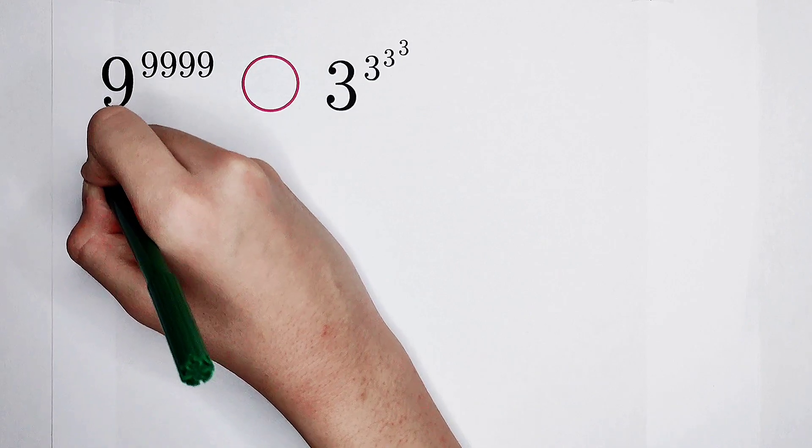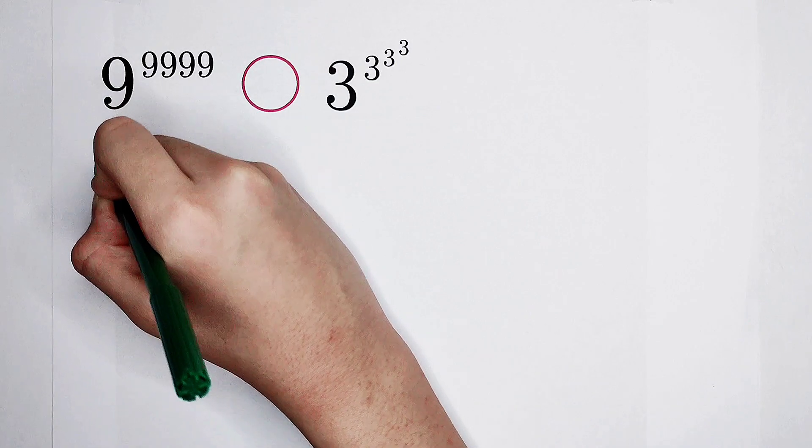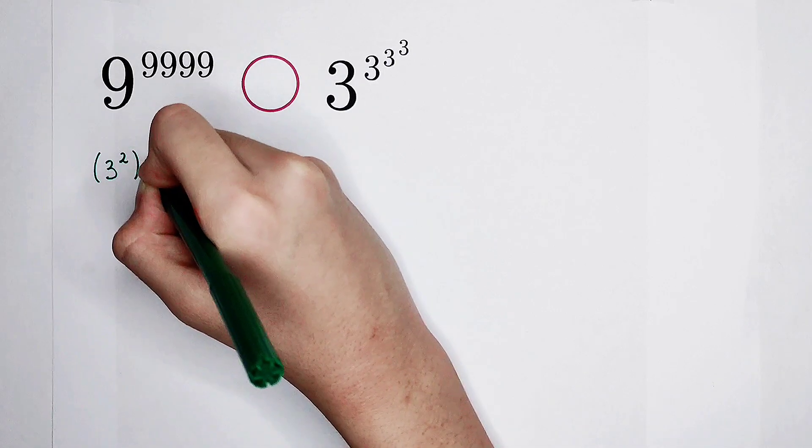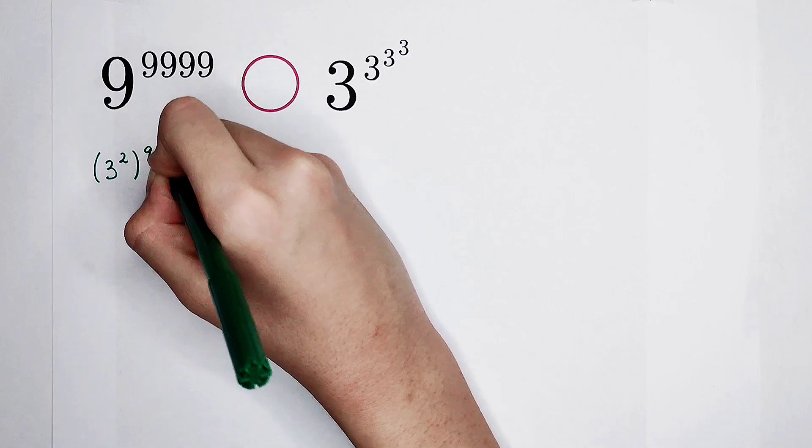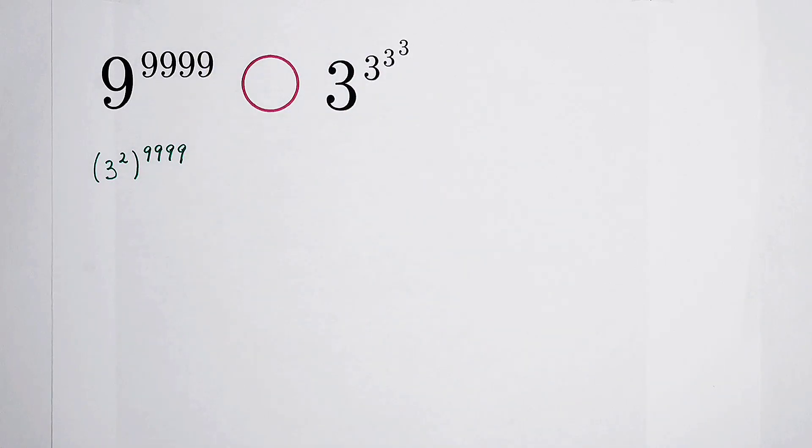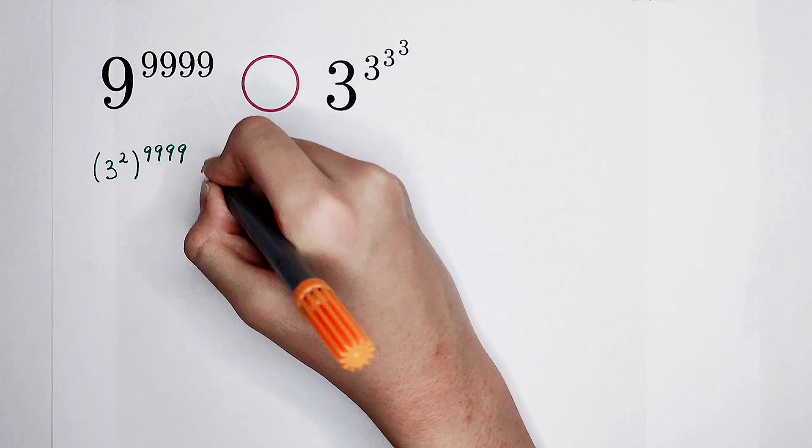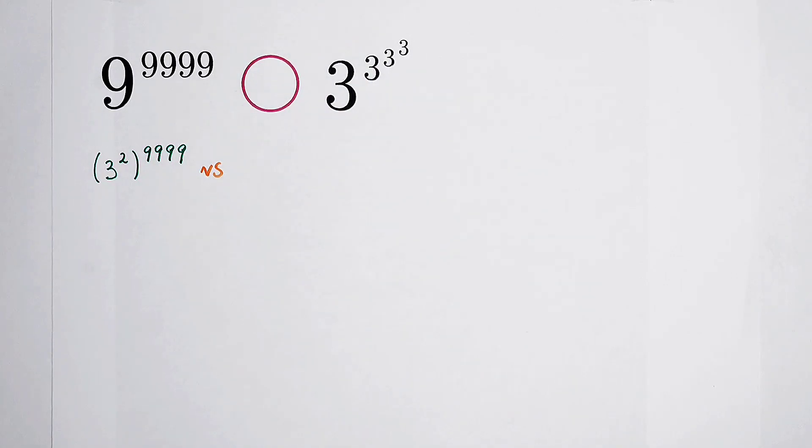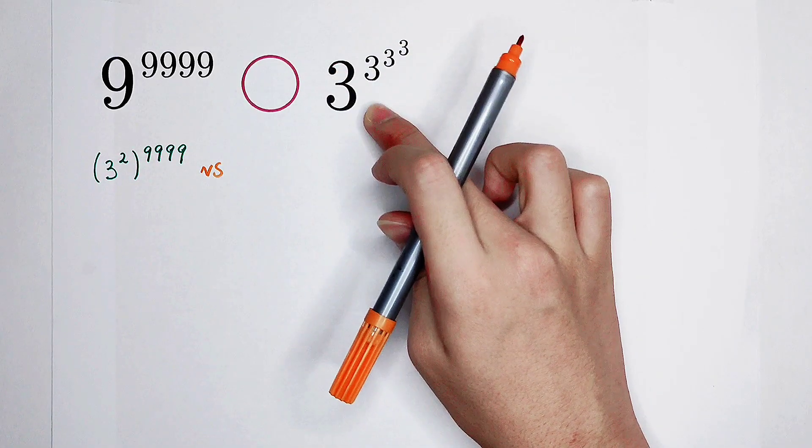So the left side becomes 3 squared, and then don't forget the bracket, to the power of 9,999. And then, what about the right side? I have a question. What is the order for us to calculate the right-hand side?